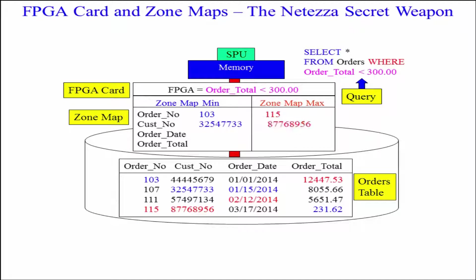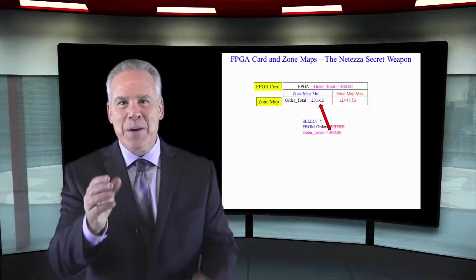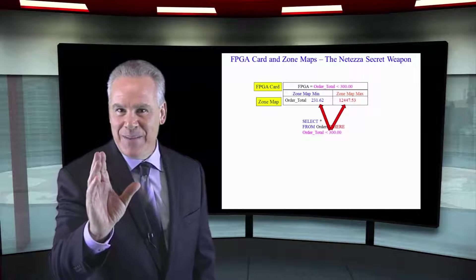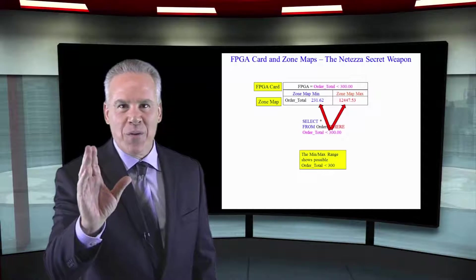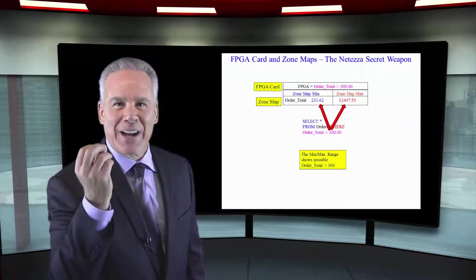They ask: is there something where an order total is less than 300? Well, the min is 231 and the max is 12,000 something. There's data in here that's going to qualify — we'll bring this block in. But there's a ton of spoos that look at this same thing and say it doesn't fall within the min/max, I don't need the block movement.